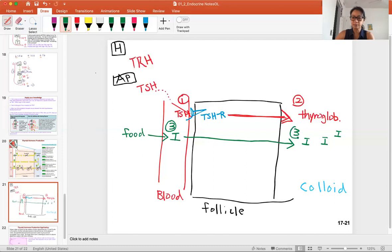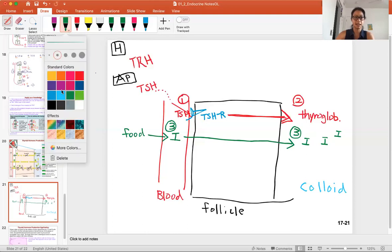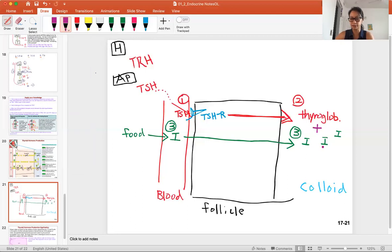This becomes a critical connection between step two and the rest of the steps. Iodine is transported from the blood through the follicle cells into the colloid. This is all step three. With iodine present, thyroglobulin plus the iodine together, you now have thyroglobulin plus iodine.